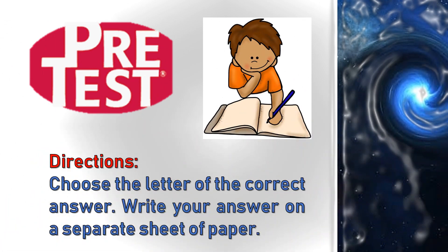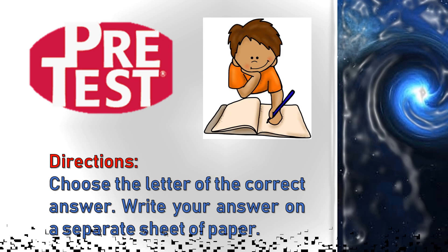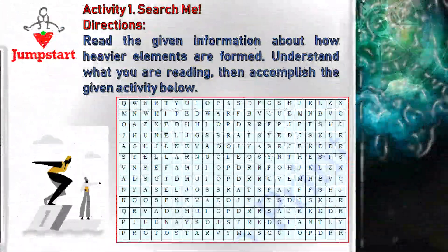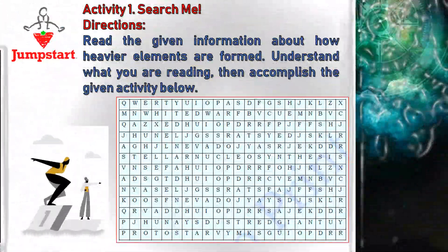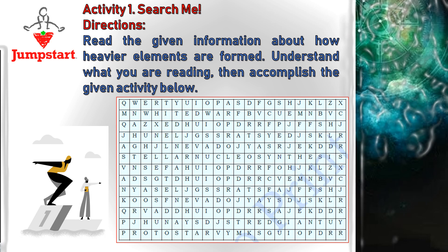Before going on, check how much you know about this topic. Answer the pre-test in page 2 and 3. These are the various activities prepared for you in page 4 under Jumpstart. Activity 1, Search me. Read the given information about how heavier elements are formed. Understand what you are reading, then accomplish the given activity below.